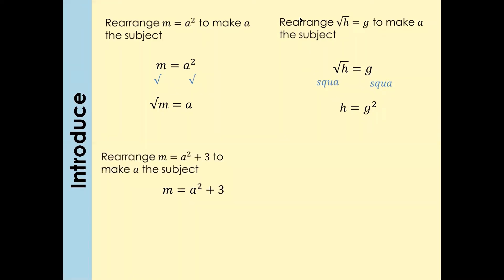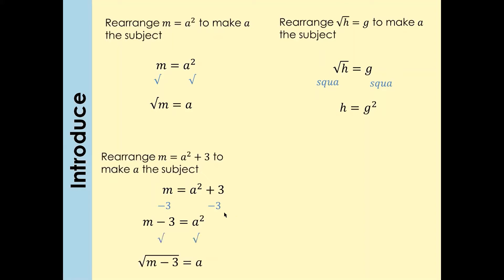That's a bit of a challenge. If I can give you one minute: we want to make a as the subject of the formula. For this one, move three to the other side first — so minus three on both sides. Then to get rid of a squared, just square root both sides. And that's going to be your final answer: a equals the square root of (m minus 3).